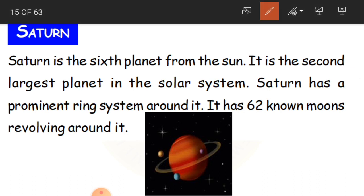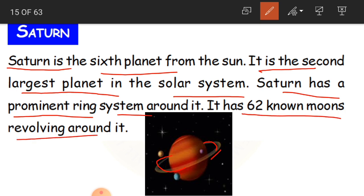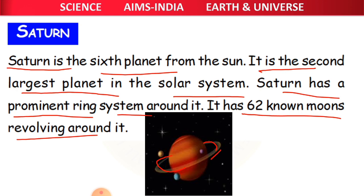The sixth planet is Saturn. It is the second largest planet in the solar system, after Jupiter. Saturn has a prominent ring system around it, making it beautiful to observe. It has 62 known moons revolving around it.